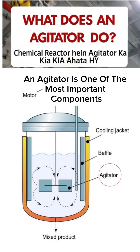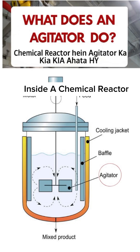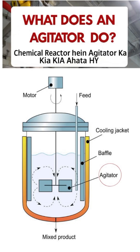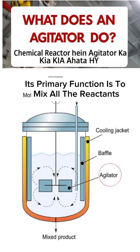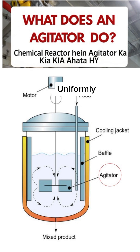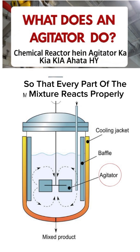An agitator is one of the most important components inside a chemical reactor. Its primary function is to mix all the reactants uniformly so that every part of the mixture reacts properly.